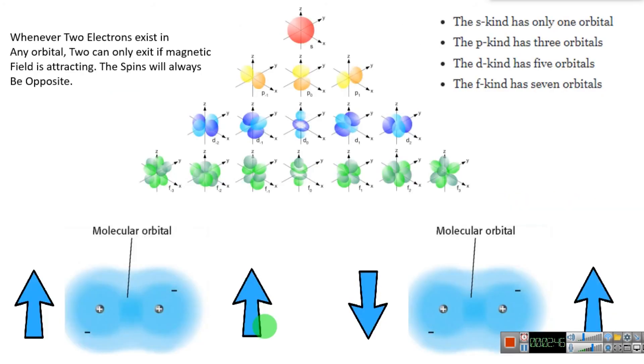If we consider any orbital, it may be s orbital, p orbital, f or d orbital. As we know, the s orbital has only one orbital and p has three orbitals. Each orbital can have maximum two electrons. Both electrons must have opposite spin.